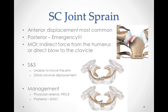A sternoclavicular joint sprain can range from a small sprain resulting in minimal pain and allowing ongoing activity, to a severe sprain resulting in significant pain, deformity, and disability. It commonly occurs in motor vehicle accidents, in contact sports due to collision with another player, or falling onto an outstretched limb. Patients typically experience sudden onset pain at the top of the chest. Pain may increase with activities involving laying on the affected side, moving the arm across the body, overhead arm movements, or performing heavy lifting, pushing, or pulling. Pain may also occur during coughing or sneezing.